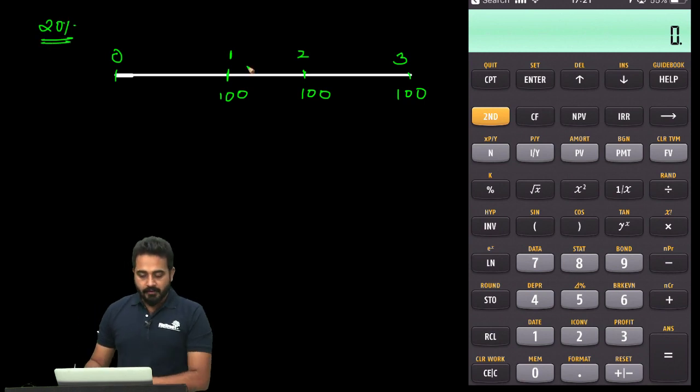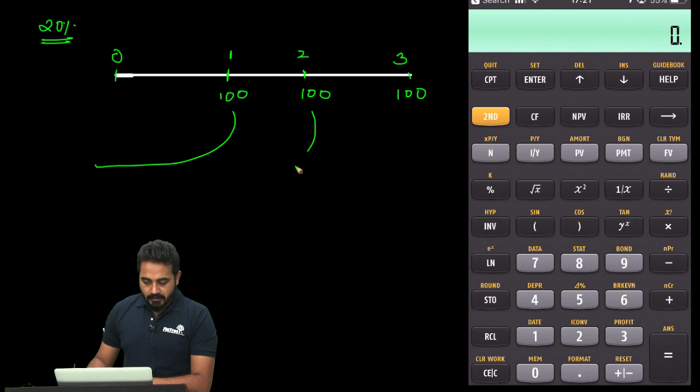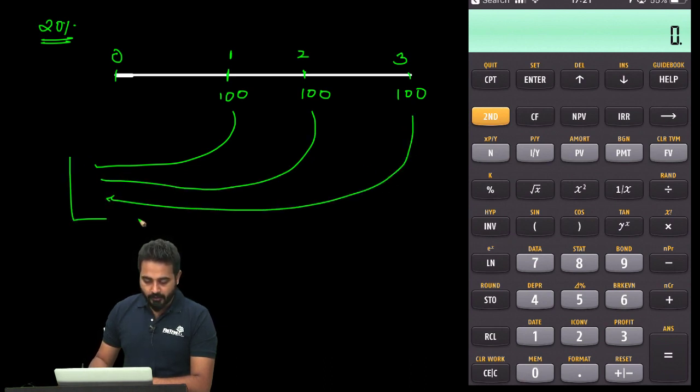Now, what if you want to take the present value of all three payments together? This means you want to take all three $100 payments and add them up. In a situation like this, you can make use of the payment button on your calculator.